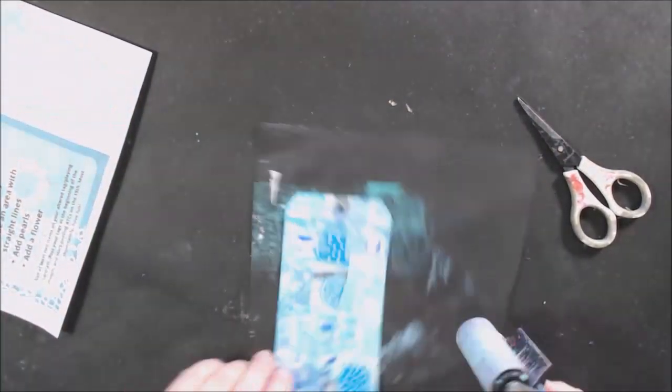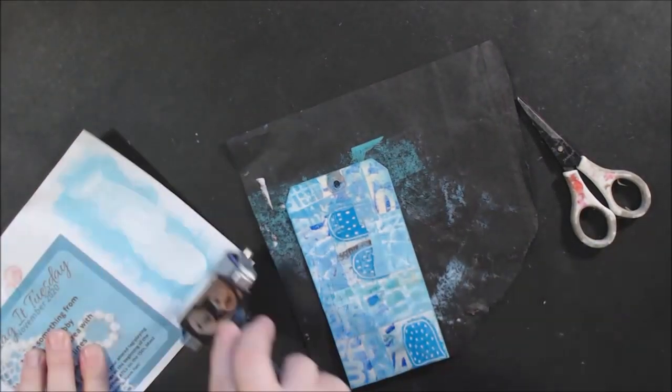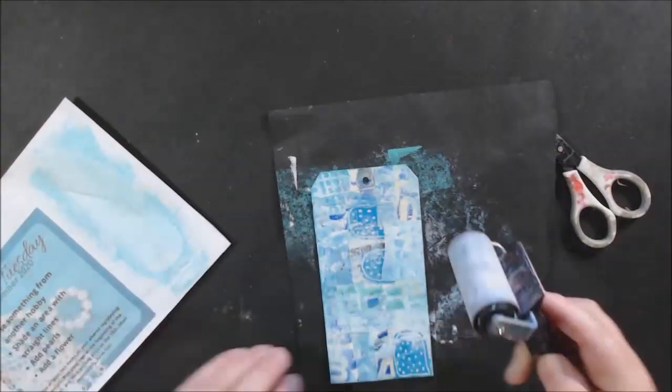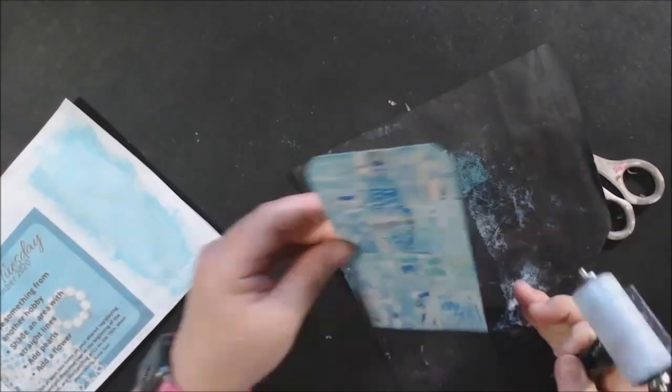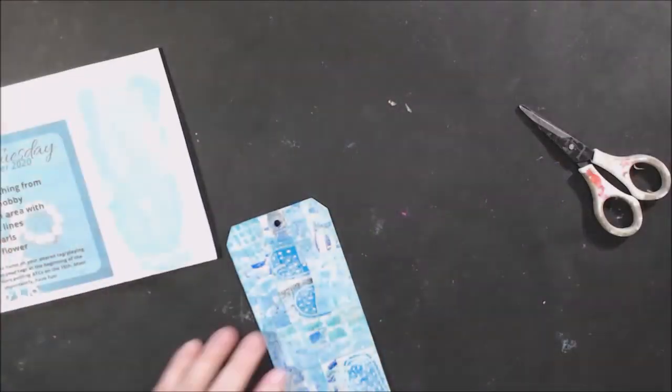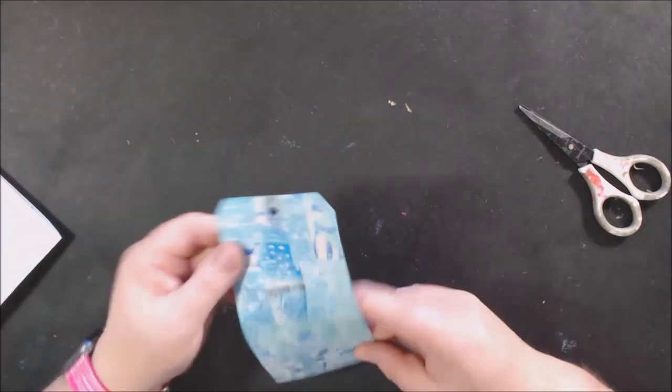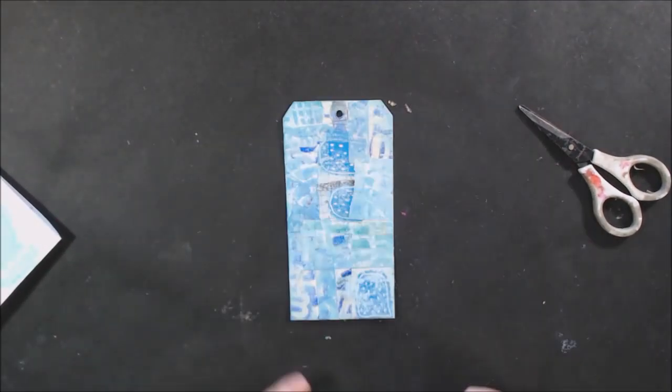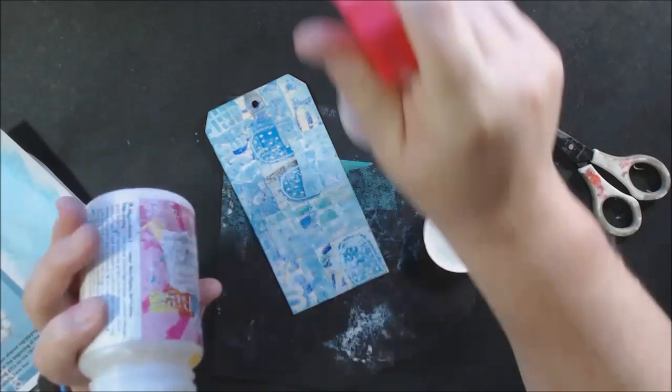I used some different papers from my stash to start out with that were in blue, different tones of blue, and then I also added a little bit of light blue washi tape as well and made kind of like a collage background. I wanted to integrate it a little bit so I used some light blue and some white acrylic paint on a brayer.